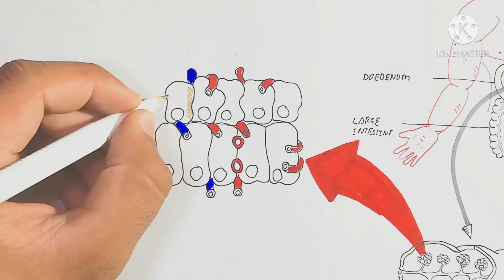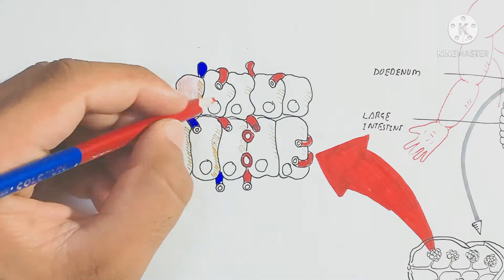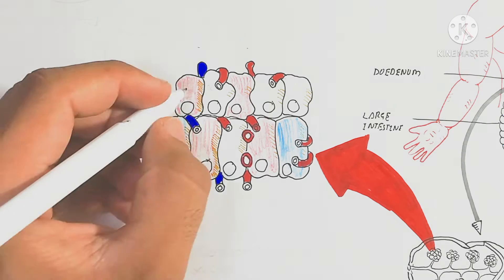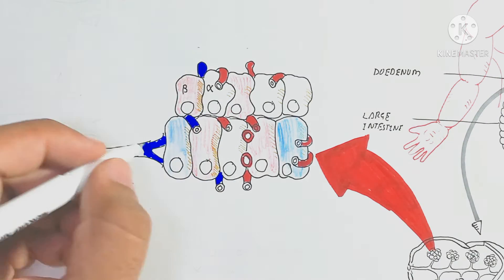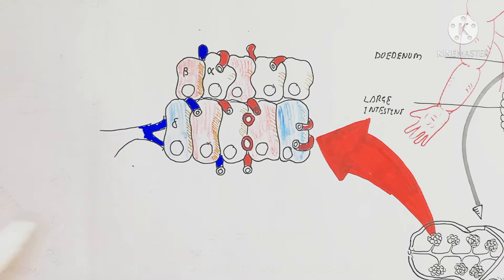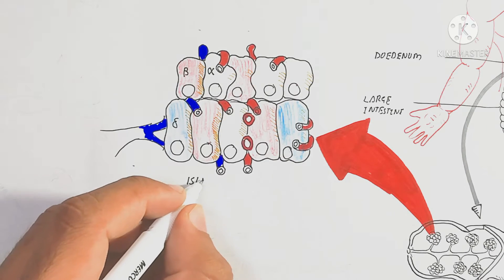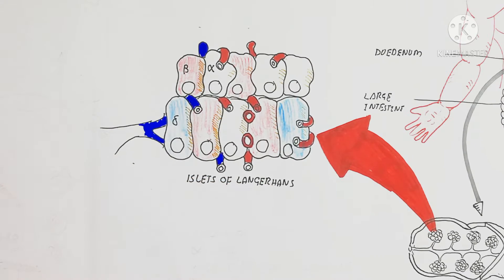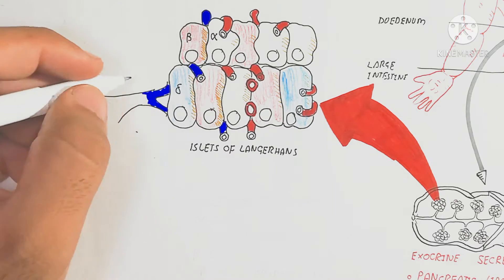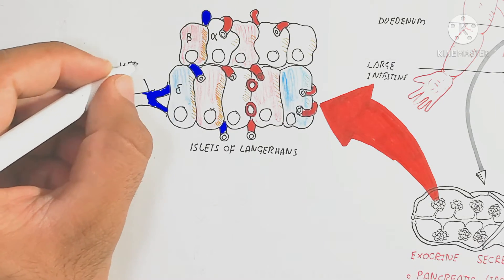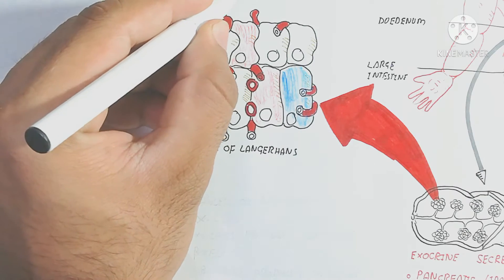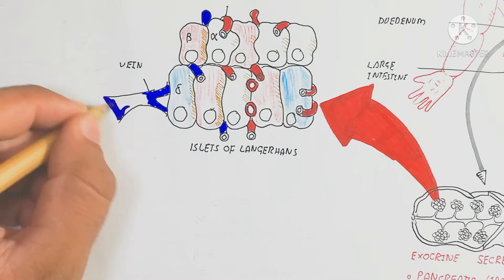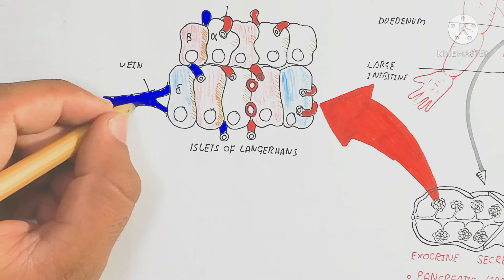Here is the structure of the islet of Langerhans, which is composed of different cell types. We will discuss the beta, alpha, and delta cells, which produce insulin, glucagon, and somatostatin respectively. The blood vessel here is used for absorption of glucagon or insulin secreted by these cells into the blood — that is why they are called endocrine hormones. The islet of Langerhans contains alpha, beta, and delta cells, as well as arteries and veins.